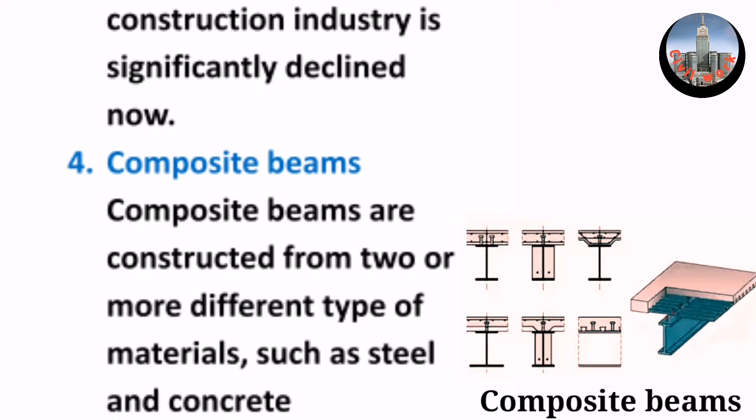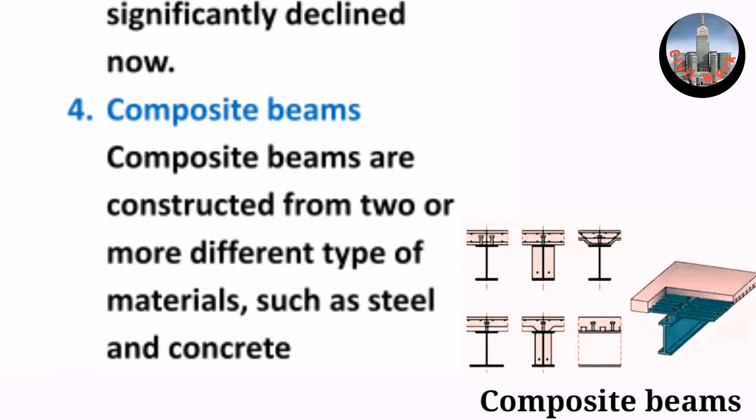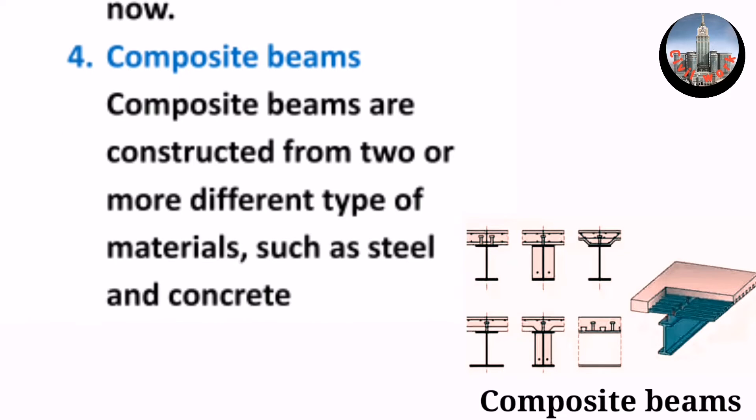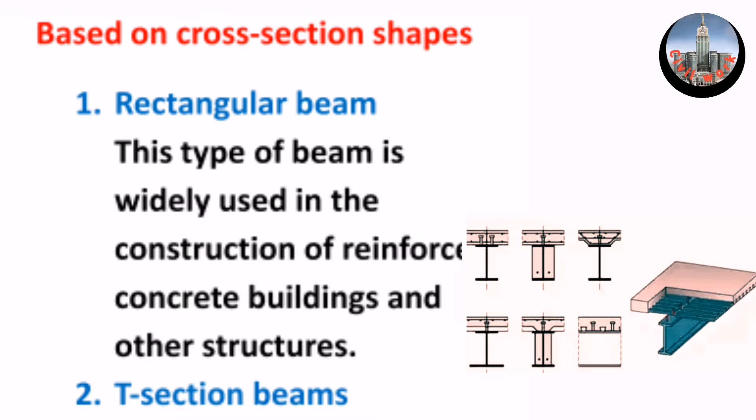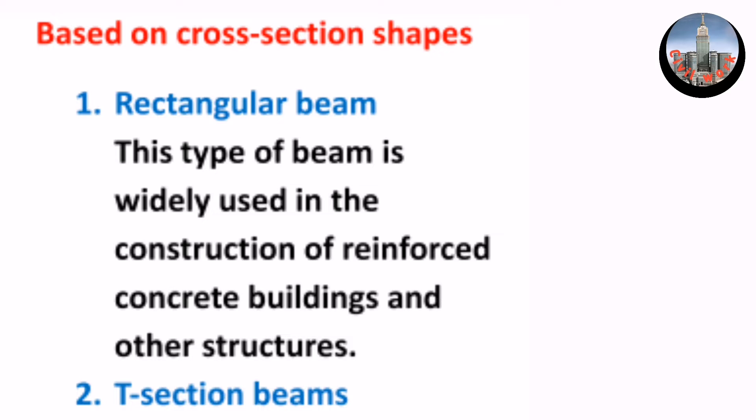4. Composite beams. Composite beams are constructed from two or more different types of materials, such as steel and concrete, based on cross-section shapes.